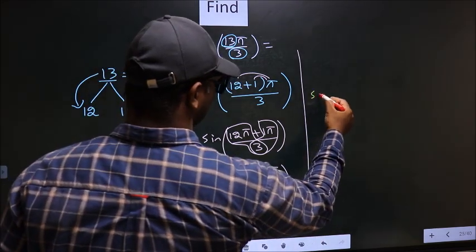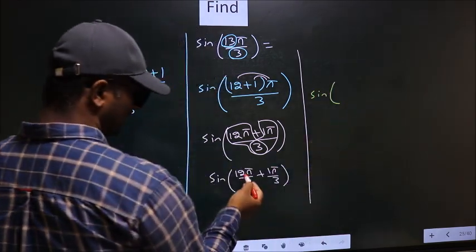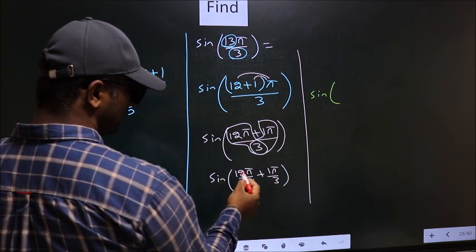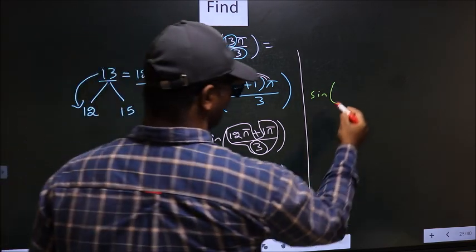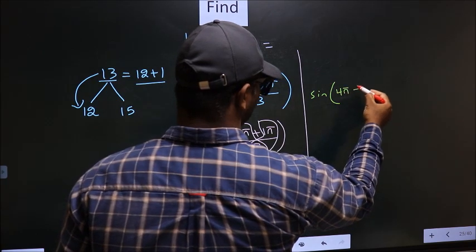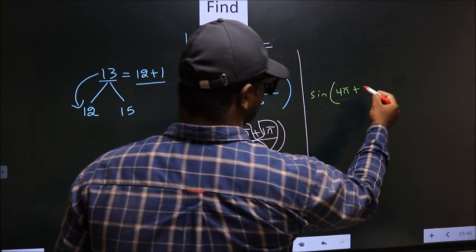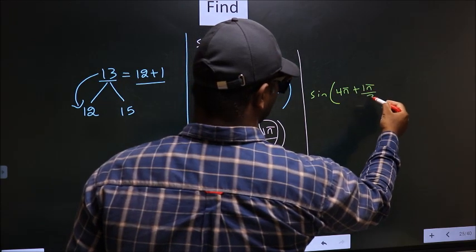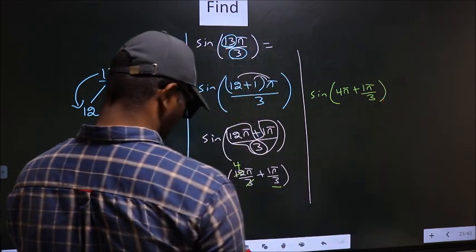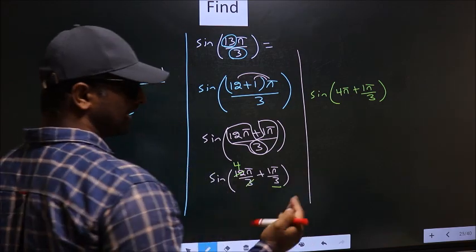Sine of—here you cancel 3 ones, 3 fours. So we get 4π plus this angle will remain as it is, 1π by 3.